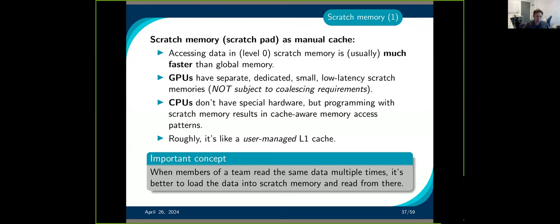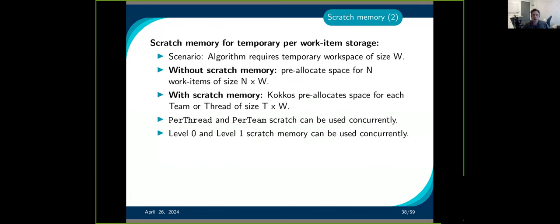If you have something you're going to keep reading over and over again, it's useful to put it in the scratchpad. If you only read it once and never again, you probably don't want to put it in a scratchpad. Another use case is if you need a temporary array — one way is to allocate an array of size N times W upfront, but that may require a lot of memory. Instead, using scratch memory you can just have one workspace per thread and one per team — this is a lot more efficient memory-wise.